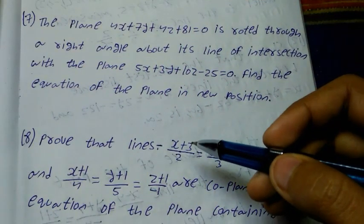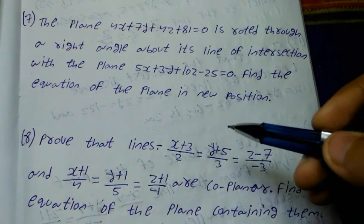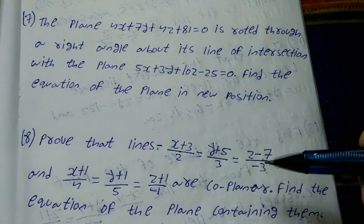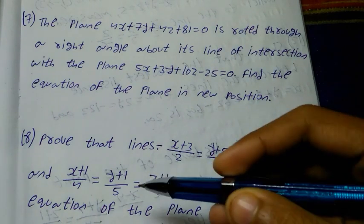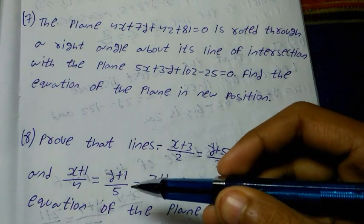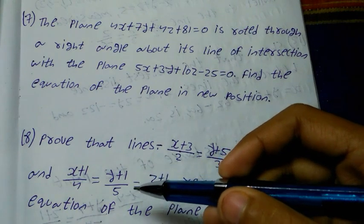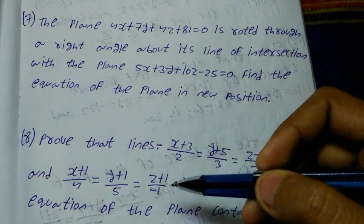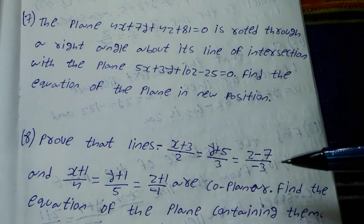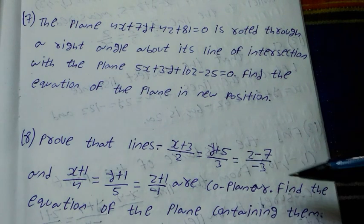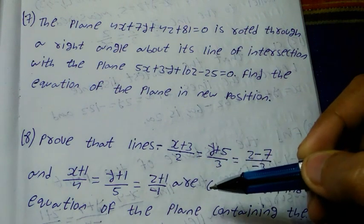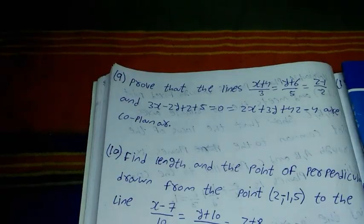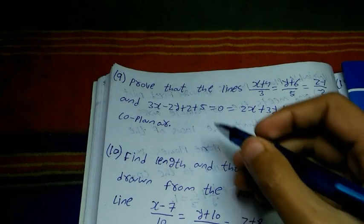Number 8 question: prove that the lines (x plus 3)/2 equal to (y plus 5)/3 equal to (z minus 7)/(minus 3) and (x plus 1)/4 equal to (y plus 1)/5 equal to (z plus 1)/(minus 1) are coplanar. Find the equation of the plane containing them.